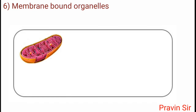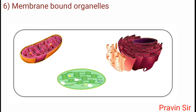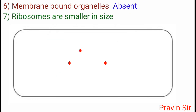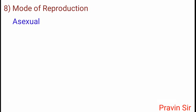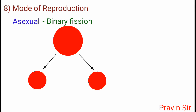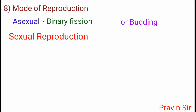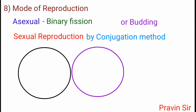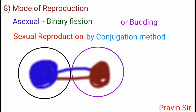Membrane-bound organelles such as mitochondria, chloroplast, and endoplasmic reticulum are all absent. Ribosomes are smaller in size, that is 70S. Mode of reproduction is asexual — binary fission, where a single cell divides equally to form two cells, or budding. Very rarely, sexual reproduction occurs by conjugation, where two bacteria come together and exchange genetic material.